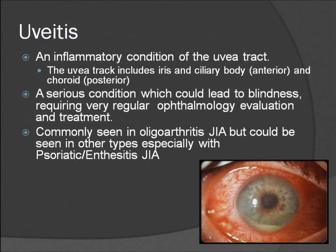Slide 7 shows some of the typical features of uveitis in JIA. On the right lower side of the slide, you can see eye findings characteristic of this presentation. It's an inflammatory condition of the iris, the ciliary body, and the choroid of the eye. It's a serious condition which could lead to blindness, requiring very regular eye exams and treatment. Uveitis is commonly seen in the oligoarticular form of JIA, but could be seen in other forms, especially psoriatic or enthesitis-associated JIA.